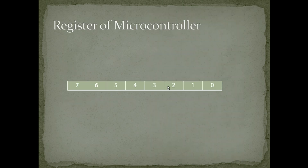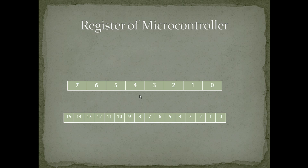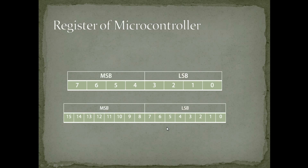This is the basic structure of a register in a microcontroller. Microcontrollers are made up of many registers. For an 8-bit microcontroller, all SFR (special function registers) and GPR (general purpose registers) are 8 bits wide — starting from bit 0 to bit 7, which is 1 byte of memory. For a 16-bit microcontroller, all registers are 16 bits wide — that is 2 bytes — starting from bit 0 to bit 15.